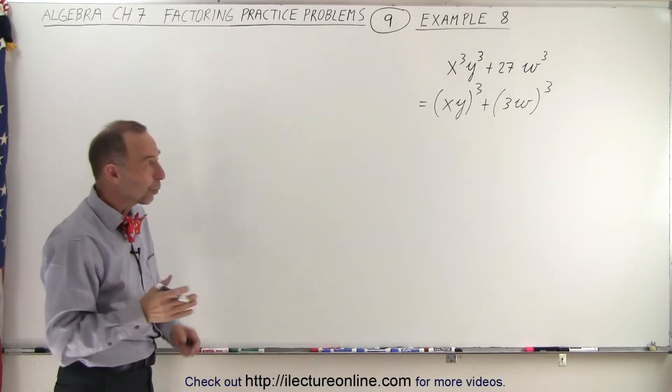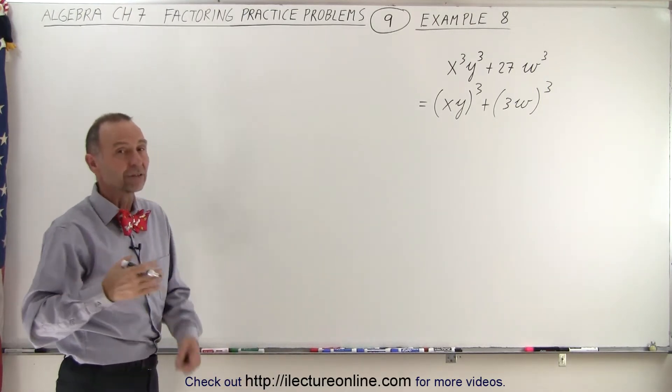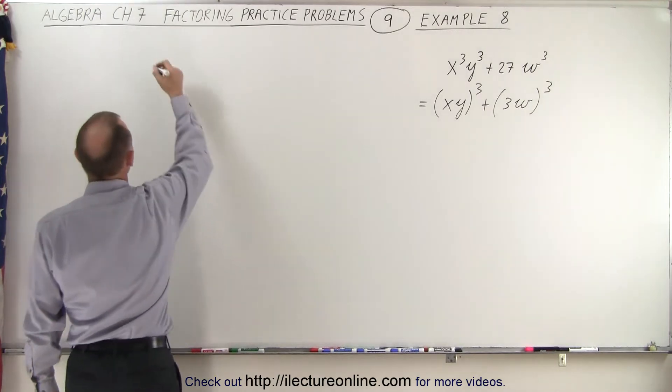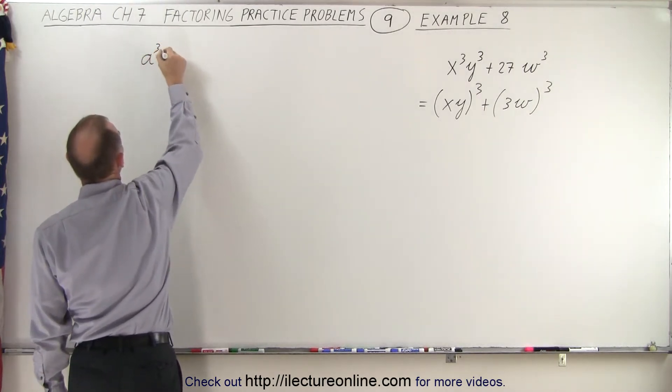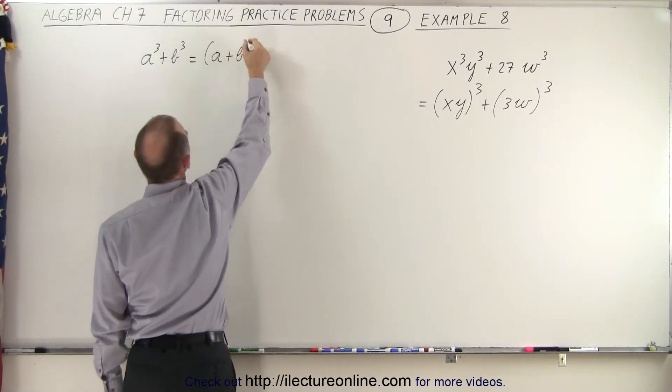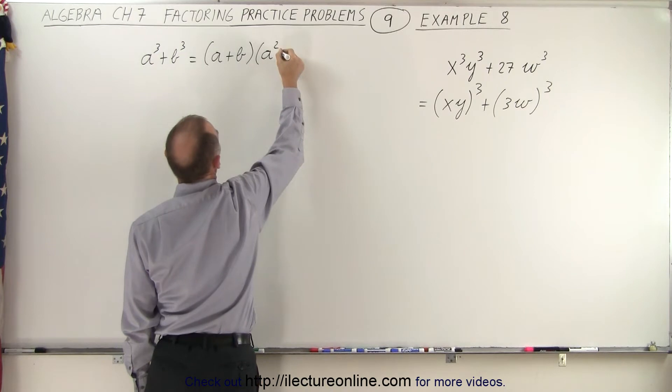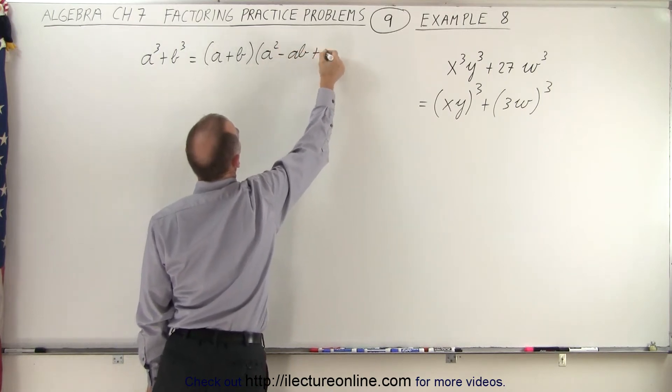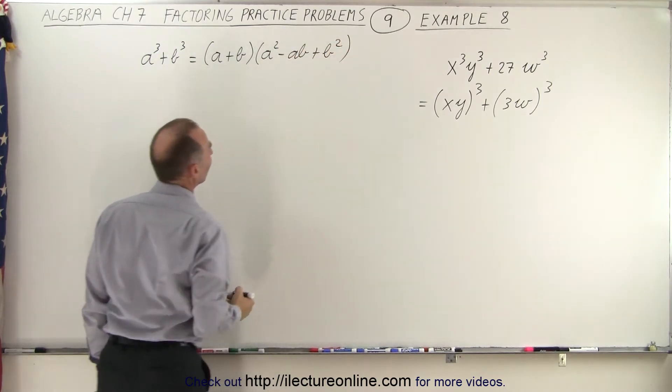We have to realize what the general format is of the factored form of the sum of cubes. So we have a³ + b³, which equals (a + b)(a² - ab + b²). And then if